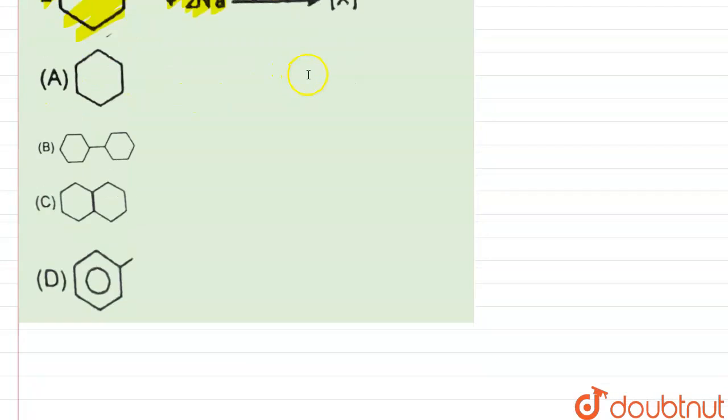What will happen in this question will actually go with the help of radical mechanism. First, that 2 Na will actually become Na radical.